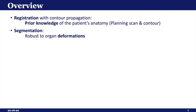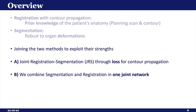Contour propagation methods have the advantage of prior knowledge of the patient's anatomy using the planning scan and contour. Segmentation methods, on the other hand, are more robust to changes in the patient's anatomy. By joining registration and segmentation, the unique strengths of both methods could be combined. We'll discuss first a loss for contour propagation, and then combine segmentation and registration in one joint network.